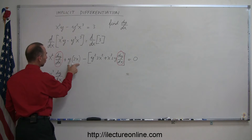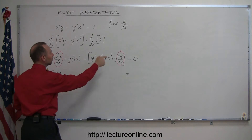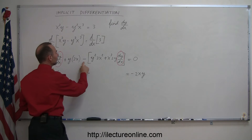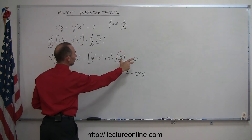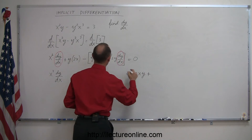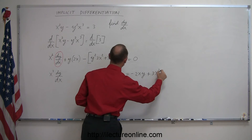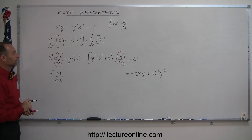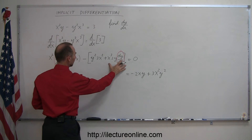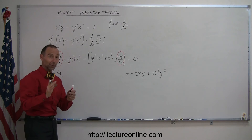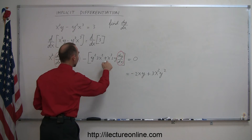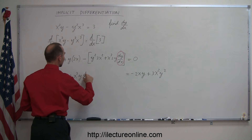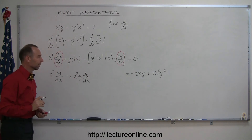The next term, which is 2x times y, we can move to the other side, so that becomes minus 2xy. Then we have minus y squared times 3x squared, which can move to the other side — the minus becomes plus, so plus 3x squared y squared. And finally the fourth term has a dy/dx in it, so we leave it on the left side — but don't forget the minus — giving us minus 2x cubed y times dy/dx.